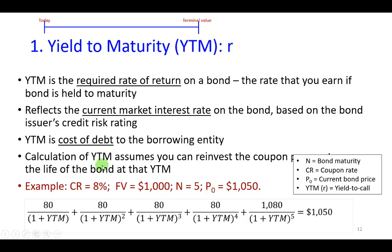To calculate the yield to maturity given the price of a bond — in this example $1,050 — this bond has five years to go, the face value of a bond by definition is $1,000. The fixed coupon interest rate established today is 8%, so annually it's going to be 8% of $1,000 or $80 every year. To find the rate of return corresponding to it, we solve for it in this time value of money equation. Whatever rate sets the present value of all the cash flows — the coupon payments of $80 and the face value of $1,000, combined to be $1,080 in the fifth and final year — equal to the current price of $1,050 is the yield to maturity.